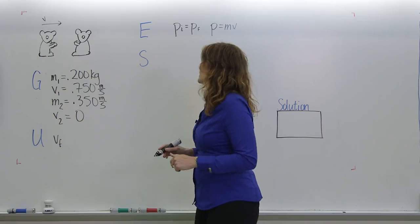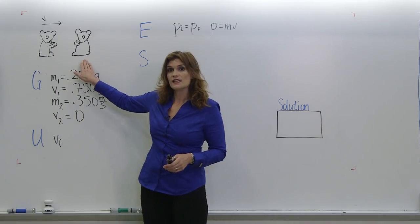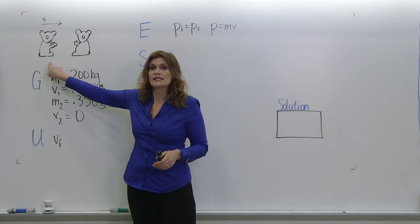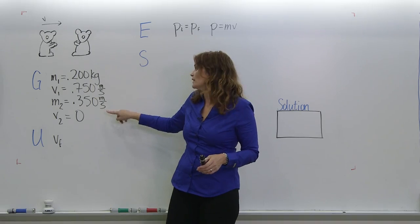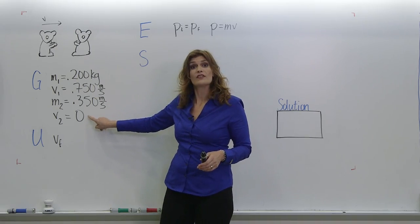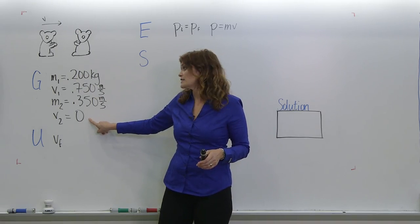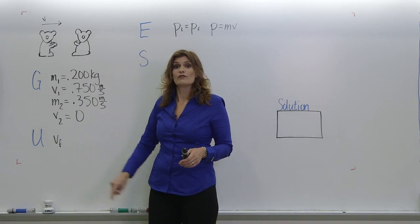So let's take a look at what's going on here. We've got this guy's at rest, he's sliding into him. Our givens are the mass and the velocity of the first koala bear, the mass of the second koala bear, and that the velocity of the second koala bear is 0, and we're looking for the final velocity.